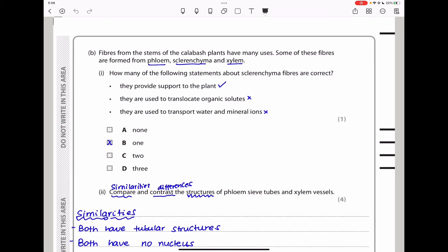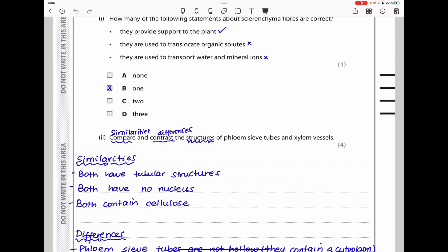Fibers from the stems of the calabash plant have many uses. Some of these fibers are formed from phloem, sclerenchyma, and xylem. How many of the following statements about sclerenchyma fibers are correct? They provide support to the plant - that is correct. They are used to translocate organic solids - this is wrong, translocation occurs in the phloem. They transport water and mineral ions - this is also wrong, this is the job of the xylem. So only one is correct, the answer is B.